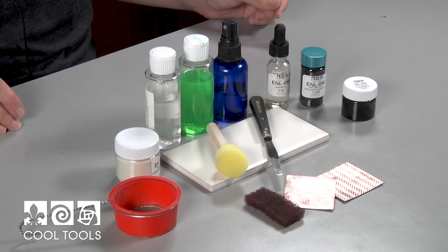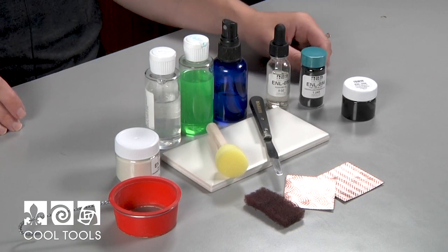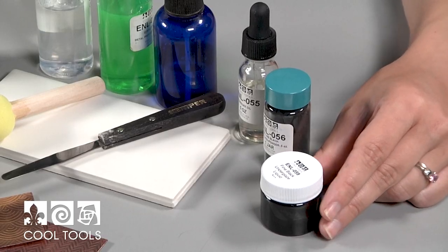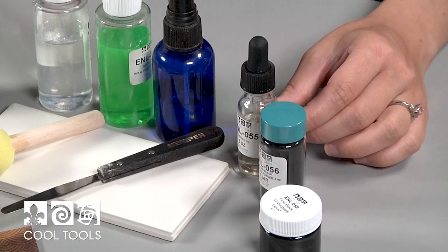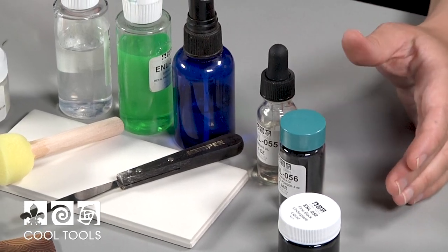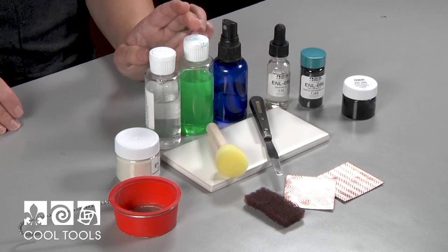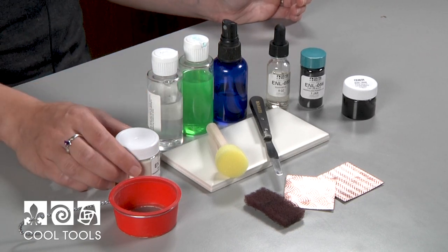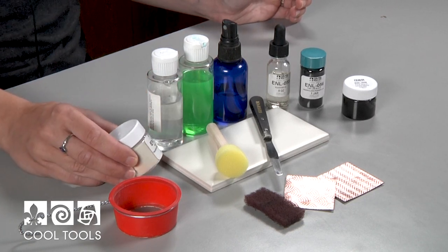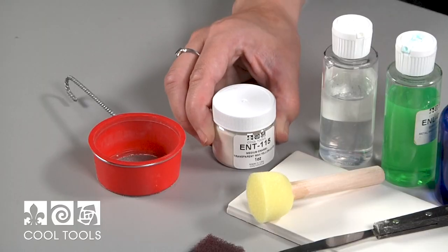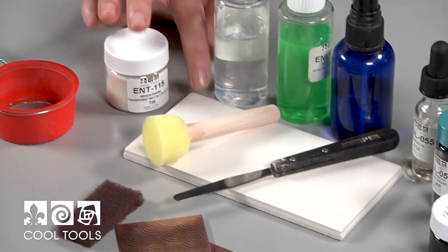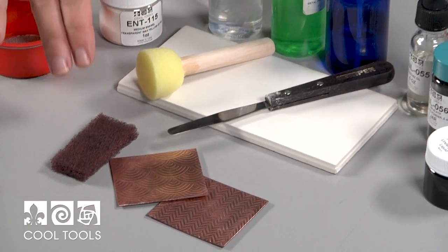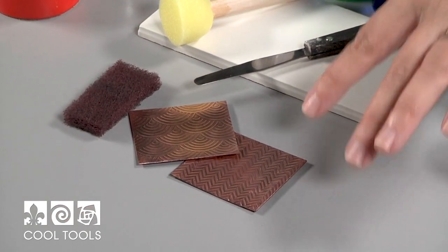Here's what you're going to need for this technique. I have some fine line black underglaze and Cool Tools sells that both as a pre-mixed liquid or as a powder and squeegee oil that you mix yourself. Either will work for this technique. A spray bottle, some surfactant, a clarifier, a transparent enamel—I'm going to be working with wax yellow—a sifter, a tile, a sponge brush, and a palette knife, a medium Scotch-Brite, and some textured metal.